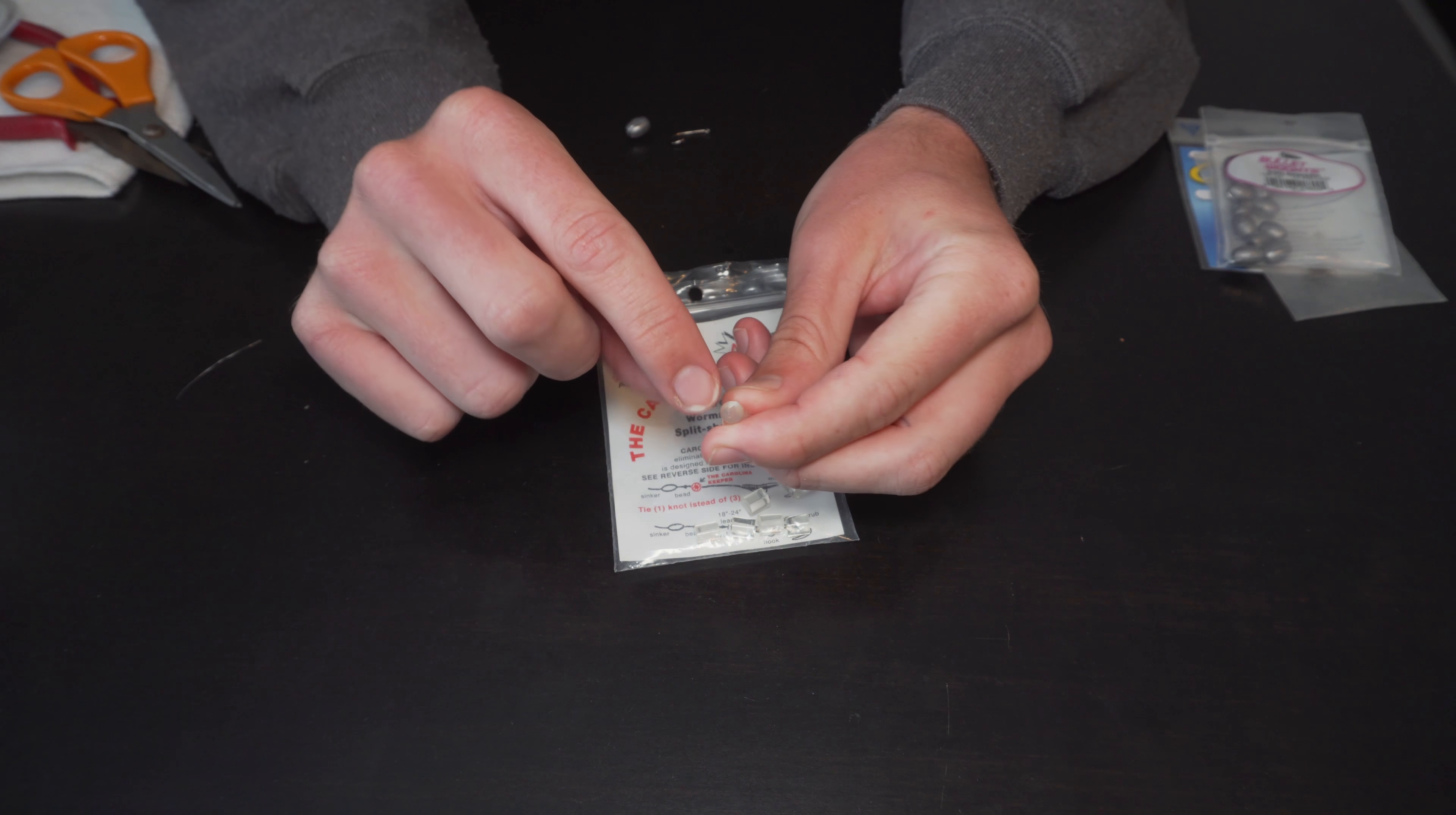So, preferably on power bait rigs, I like 6 pound test. You know, those fish get a lot of time to look at it, being that it's not really moving. So I like to do the thinnest line possible. I get a lot more bites with that. So first thing, we're going to take our egg weight. We're just going to slide it on just like that. Boom, it's on.